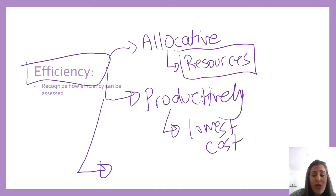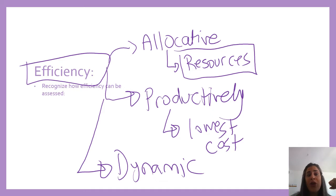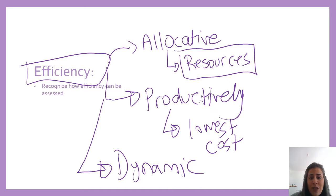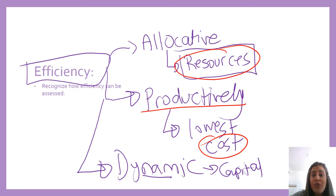The third key term is dynamic efficiency. Dynamic efficiency occurs over time as a result of investment and innovation — the more we invest in capital and the more innovative we are, the better in terms of efficiency we will be. So: when you see the term 'capital,' relate it to dynamic efficiency; when you see 'lowest cost,' relate it to productive efficiency; and when you see 'resources,' relate it to allocative efficiency.